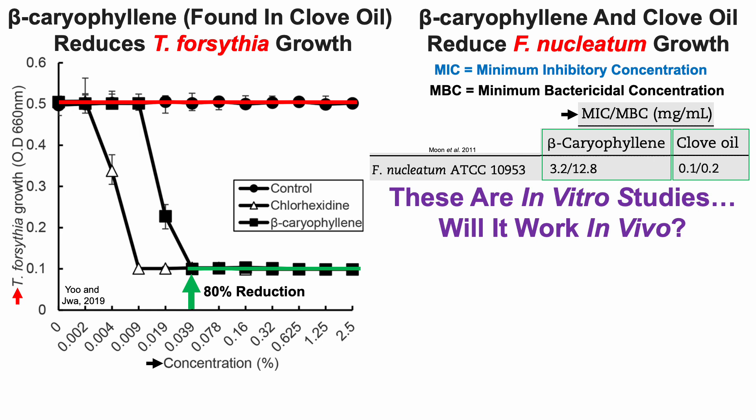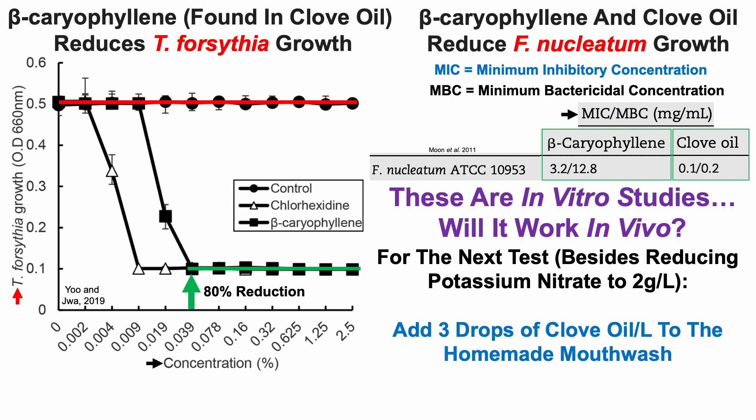Note that these are in vitro studies — there's no RCT data looking at this in vivo — so whether it will work is unknown. But I can do that experiment by testing my salivary microbiome with Bristle. For the next test, besides reducing potassium nitrate to two grams per liter (cutting it in half), I'm going to add three drops of clove oil — the same amount I use for peppermint oil. How effective that amount will be is very debatable, but I can test and evaluate the data. Stay tuned for test number three.